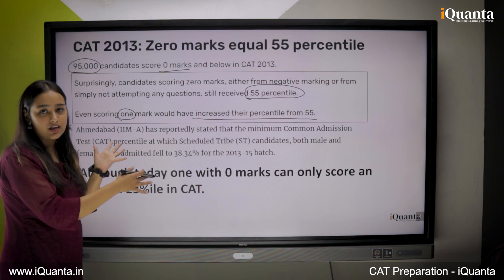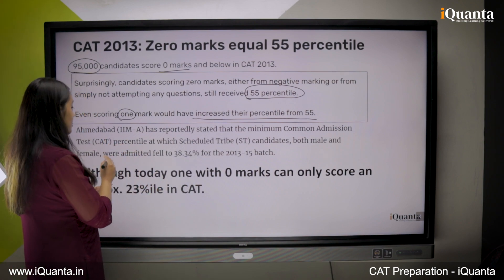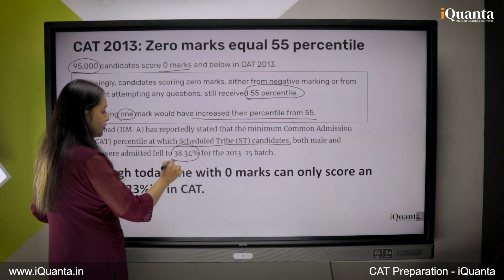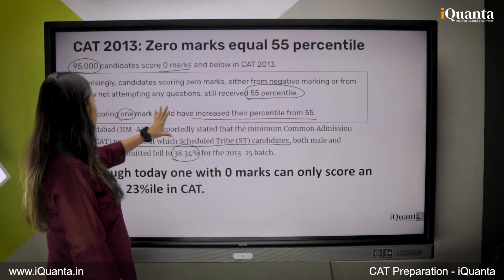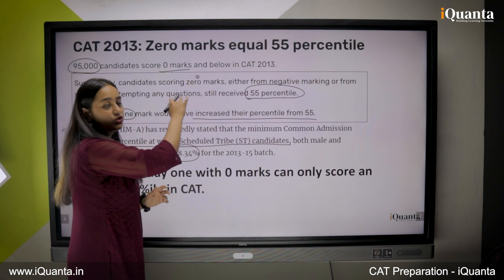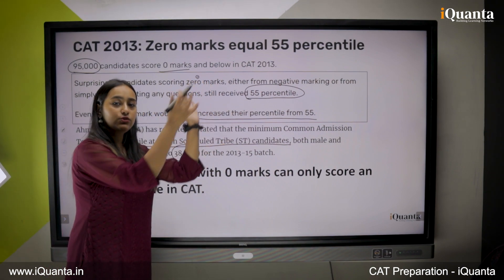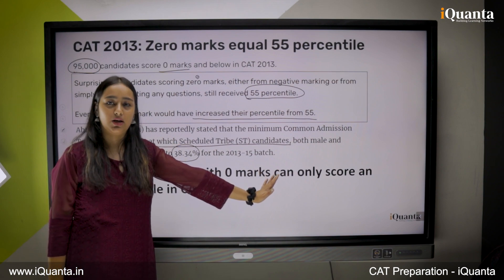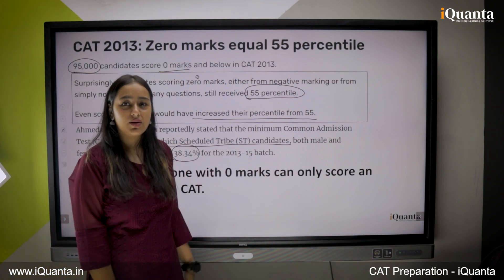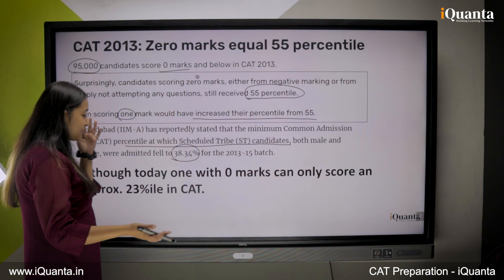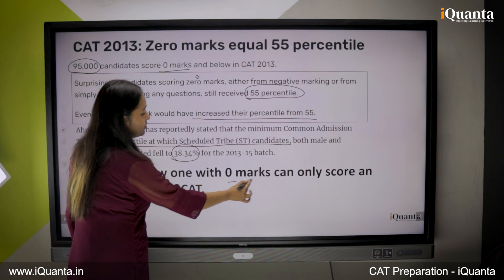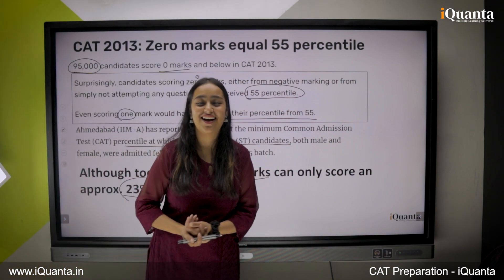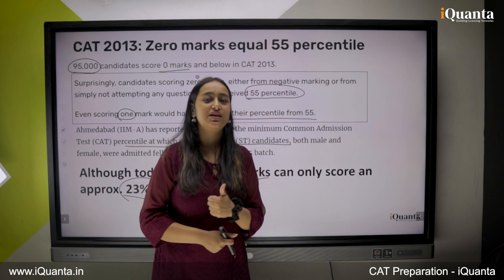IIM Ahmedabad released information showing that the percentile for ST candidates was 38.34 percentile — even below 55. Among those who scored 0 or below due to negative marking, some ST candidates managed to convert IIM Ahmedabad. So you see, even with negative marking, IIM Ahmedabad was possible. However, in today's scenario if you score 0, you only get above 23 percentile in CAT, so that benefit is no longer there for students.